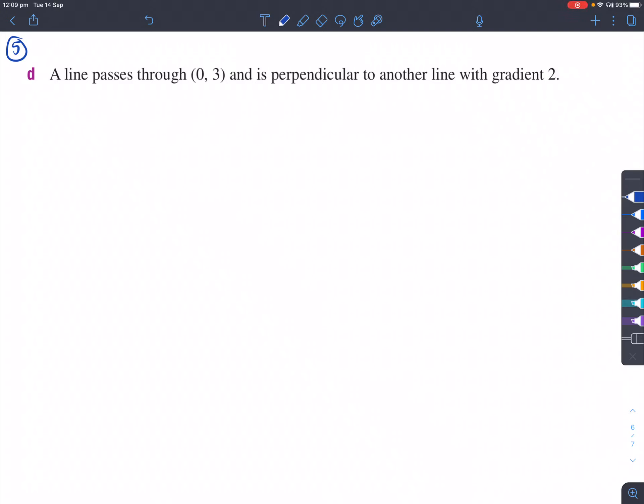For question 5D, we've got to find the equation of a line that passes through (0,3) and is perpendicular to another line of gradient 2. So (0,3) is basically somewhere here, which just means three units up from the y-axis. And there's a line that passes through that point.